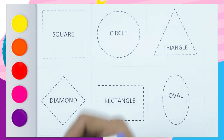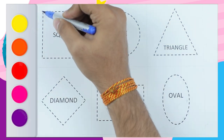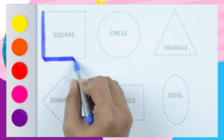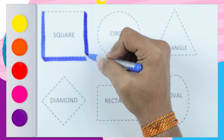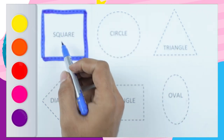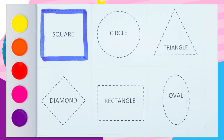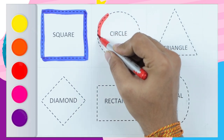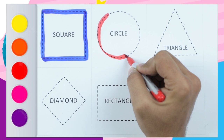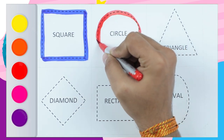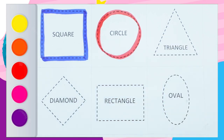Blue color with square — straight line, sleeping line, standing line, sleeping line — it's a square! Blue color square. Circle — red color circle. Wow, it's a circle! Red color.